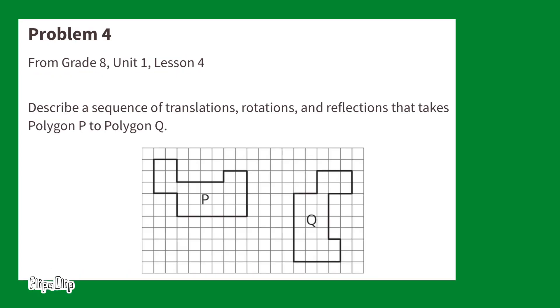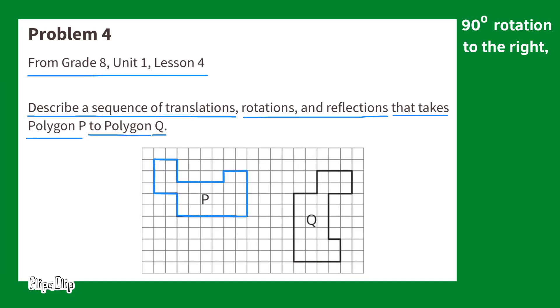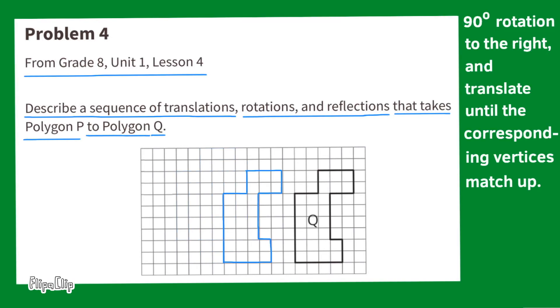Problem number four from eighth grade, unit one, lesson four. Describe a sequence of translations, rotations, and reflections that takes polygon P to polygon Q. A 90-degree rotation to the right, and translate until the corresponding vertices match up.